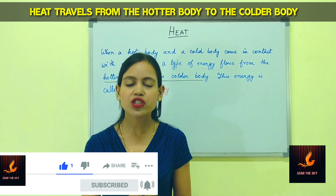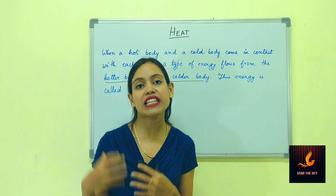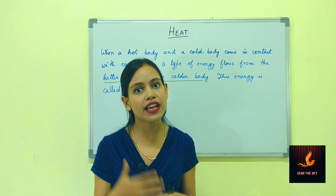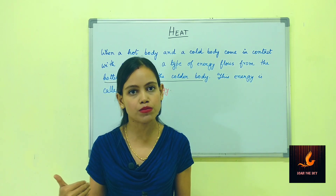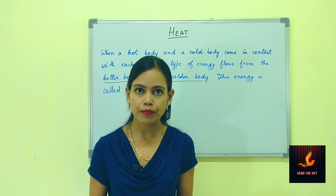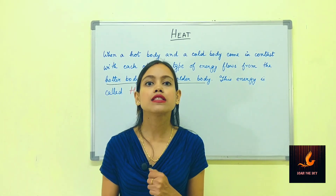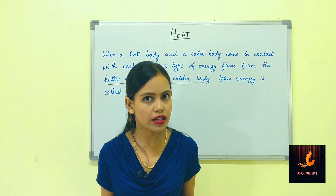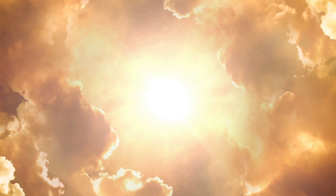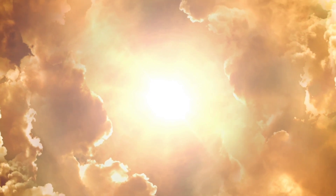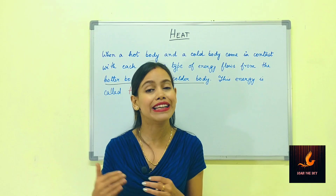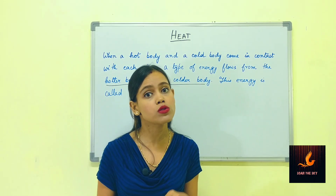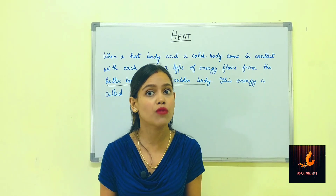An object becomes hotter when heat energy flows inside it. Similarly, when heat energy travels out from an object it becomes colder. The sun is the most important natural source of energy on Earth, and heat can also be produced from various other sources such as electricity, magnetism, electromagnetism, and various forms of friction.